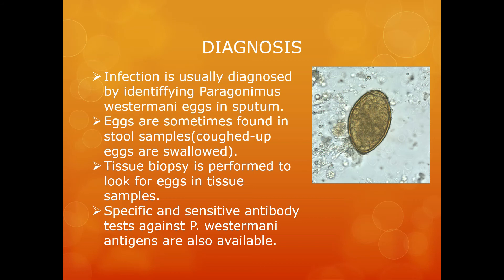Diagnosis can be achieved through several means. You may try to identify Paragonimus westermani eggs in the sputum, or they could also be found in stool specimens if the eggs that are coughed up are swallowed. Alternatively, antibody tests against Paragonimus westermani antigen are also available.